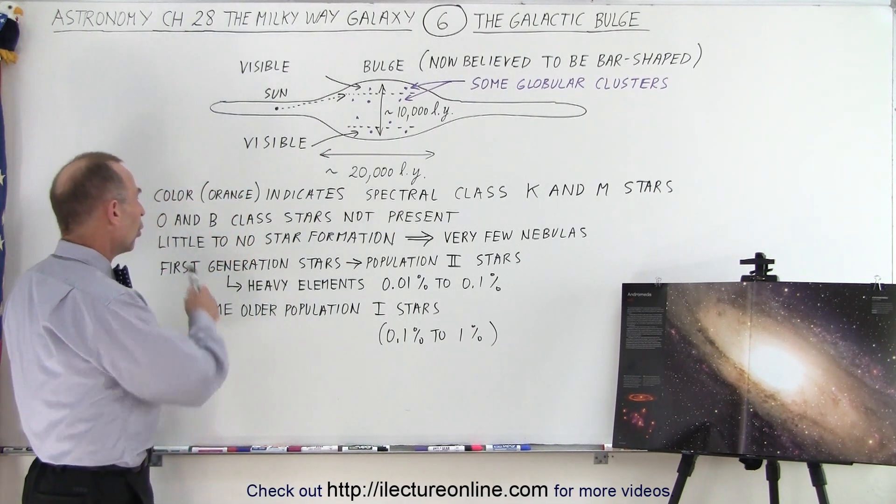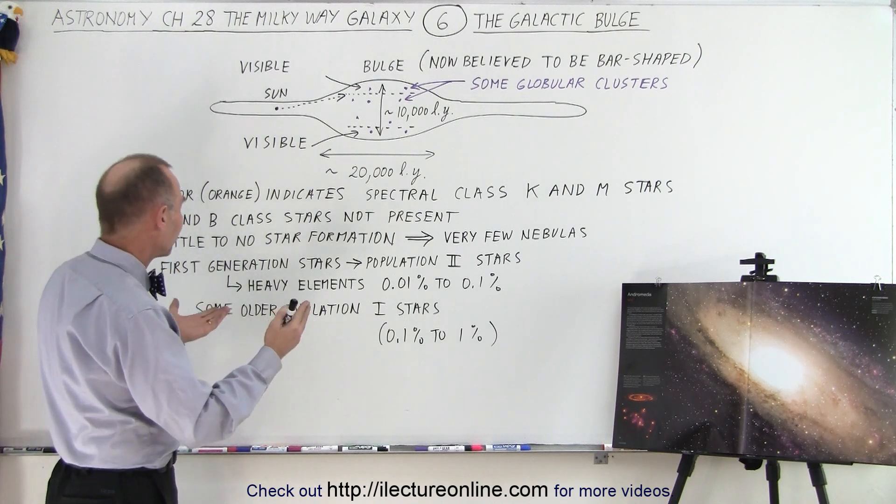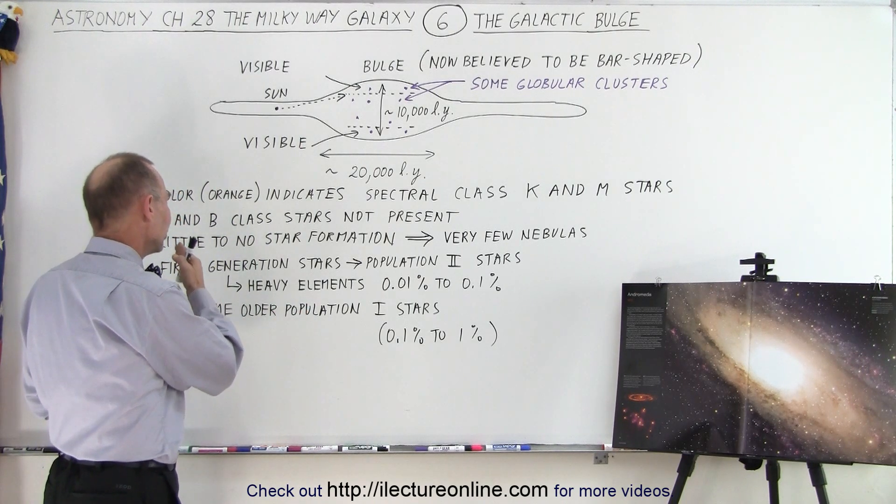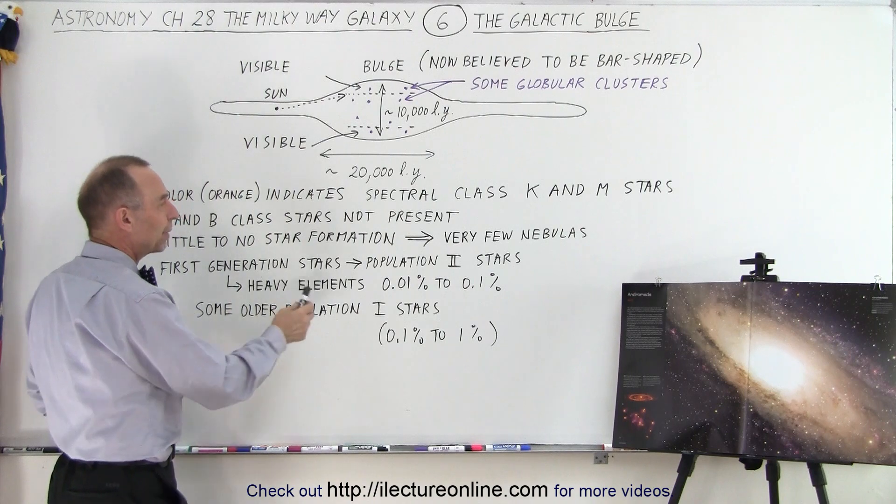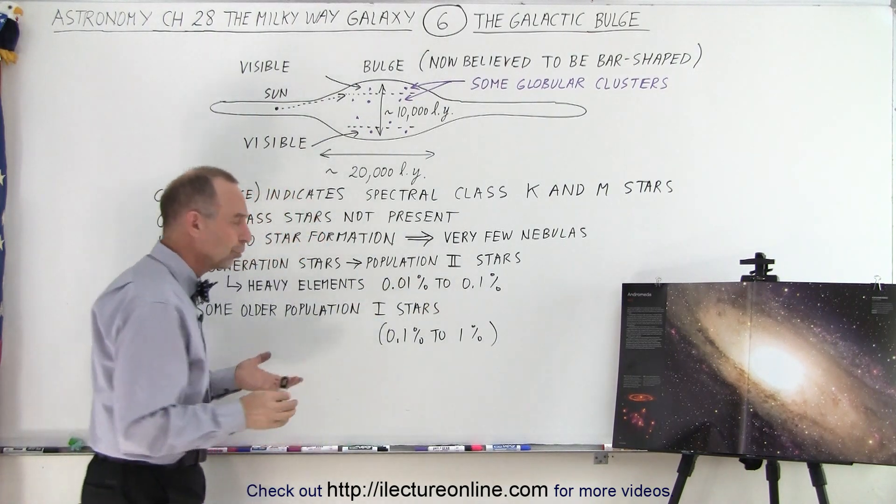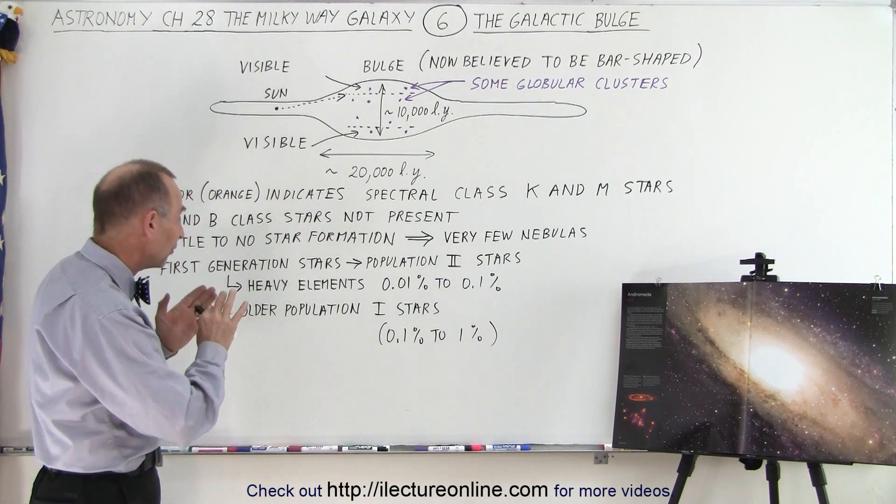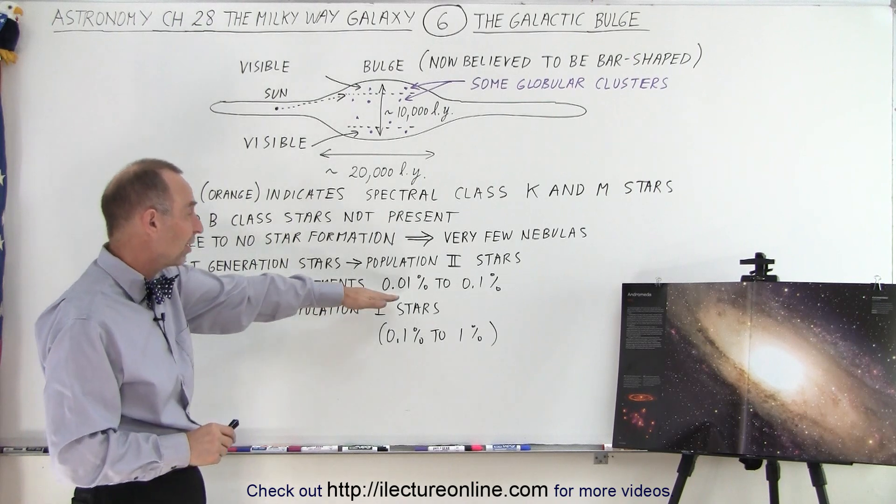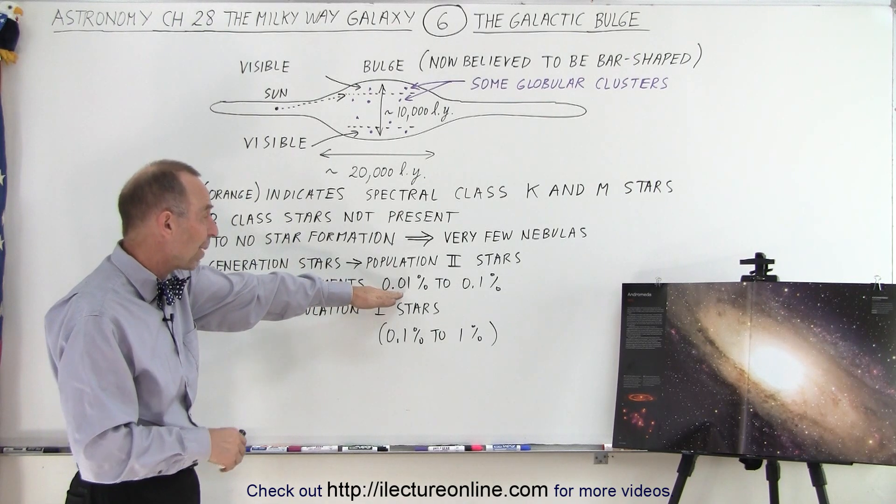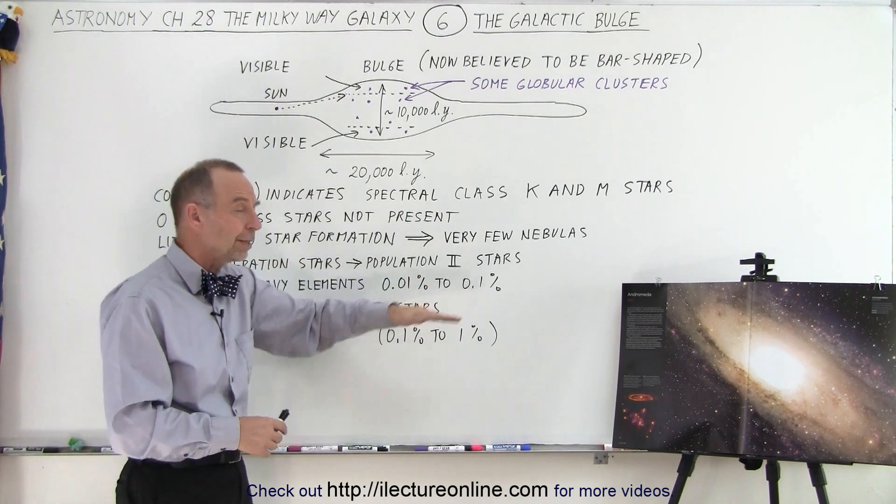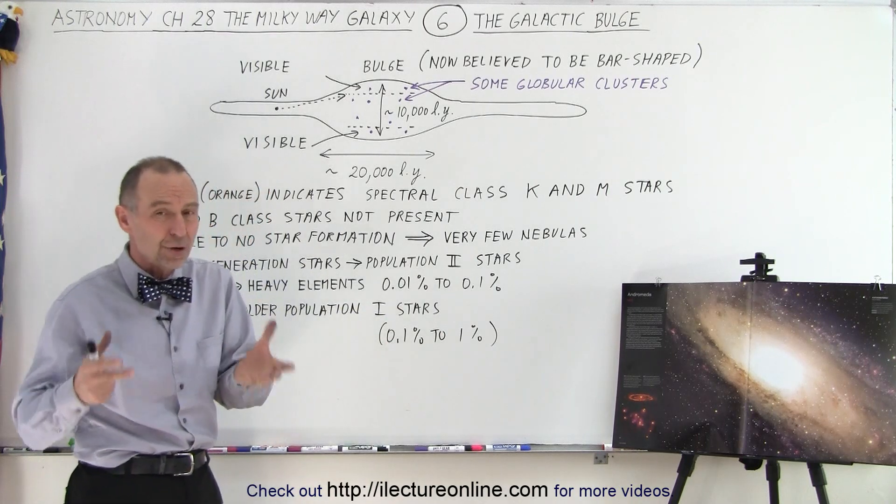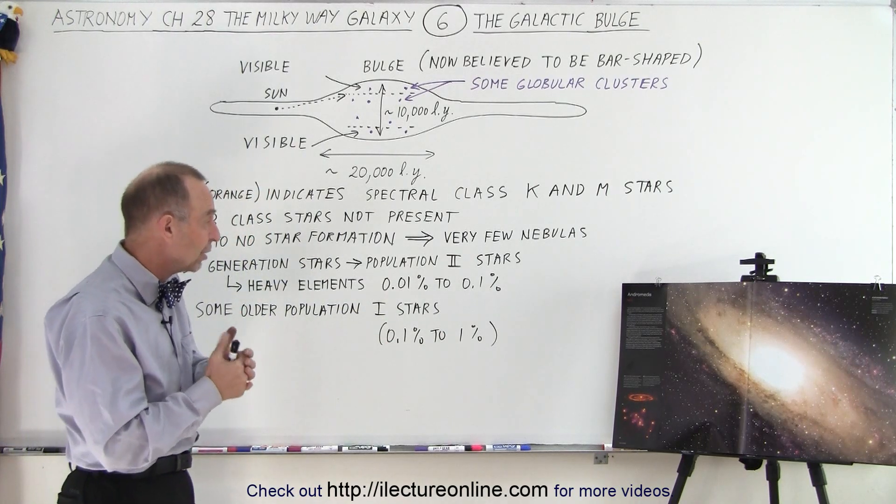So we can see then that the O and B-class stars are simply not present, that there's mostly the first-generation stars called Population II stars. And those Population II stars contain very few of the heavy elements, more or less in the density of about 0.01% to about 0.1%. So virtually no heavy elements are within those stars.